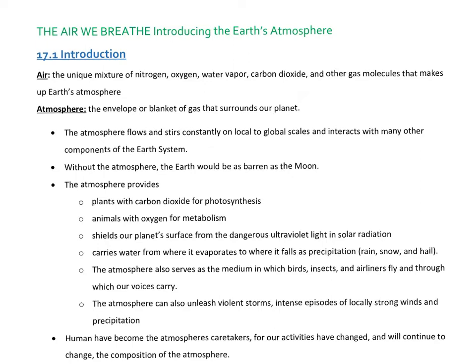If I covered this yesterday, go ahead and fast forward the video — we all stopped in a different spot yesterday. So the atmosphere: the basic definition is the envelope of gases that surround our planet. And those gases would be air, a mixture of nitrogen, oxygen, carbon dioxide, methane, and so many different gases. Anything you've heard of in gas form makes up some portion of the atmosphere. But the key two are nitrogen at 78% and oxygen at 21%.